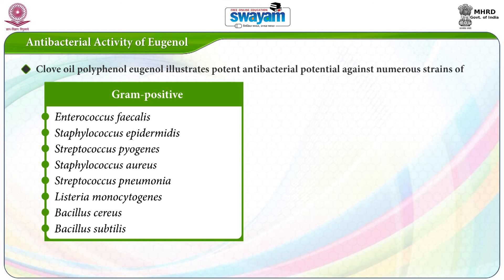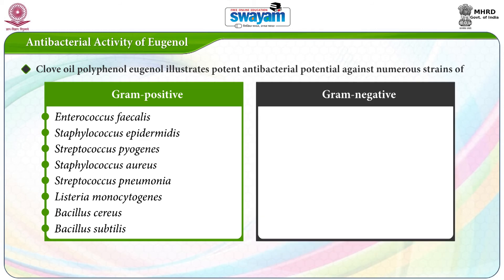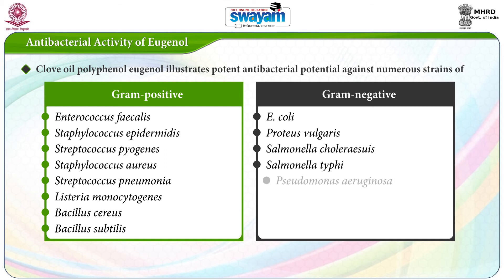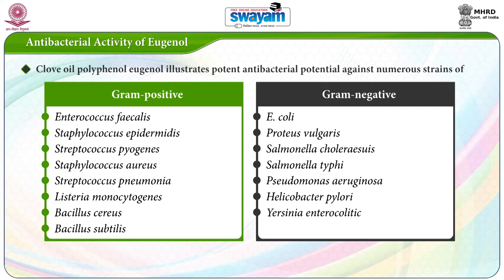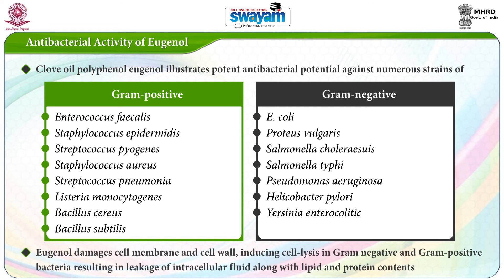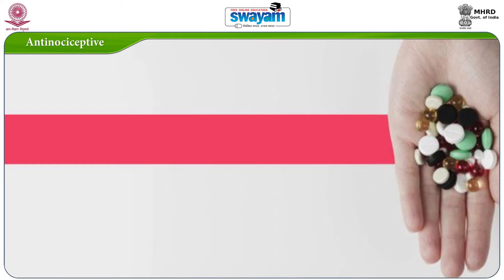Antibacterial activity of eugenol: eugenol exhibits antibacterial activity against gram-positive bacteria such as Bacillus cereus and Bacillus subtilis, and gram-negative bacteria such as E. coli, Proteus vulgaris, Salmonella cholerasius, Salmonella typhi, Pseudomonas arginosa, Helicobacter pylori, and Yersinia enterocolitica. Eugenol damages the cell membrane and cell wall, inducing cell lysis in both gram-negative and gram-positive bacteria, resulting in leakage of intercellular fluid along with lipid and protein contents.